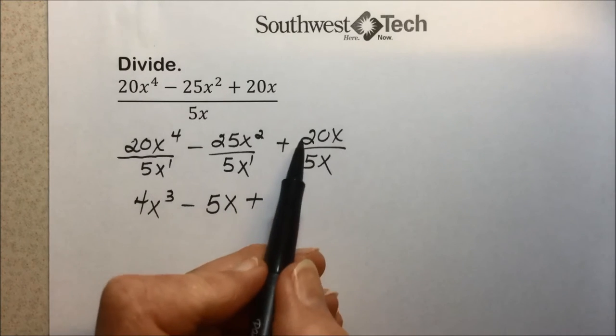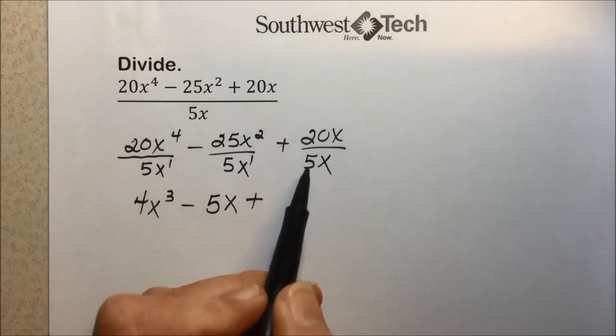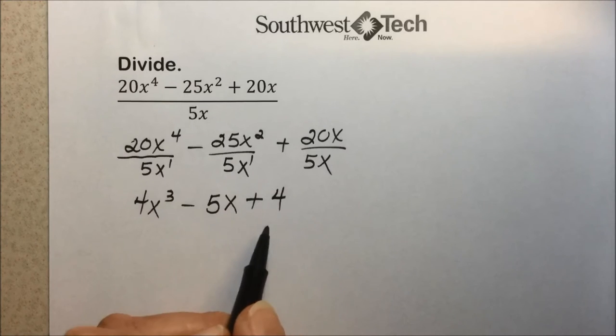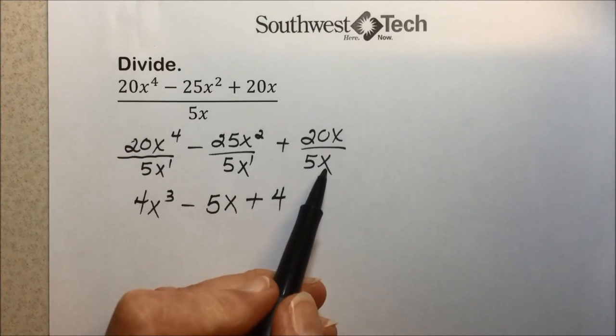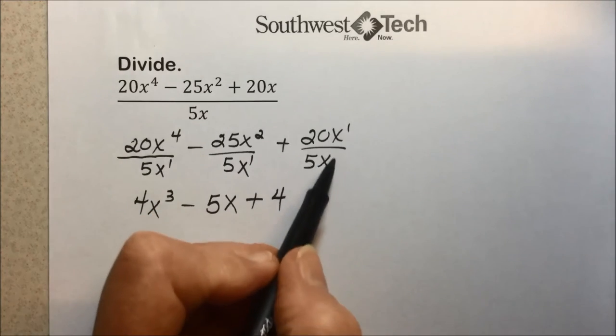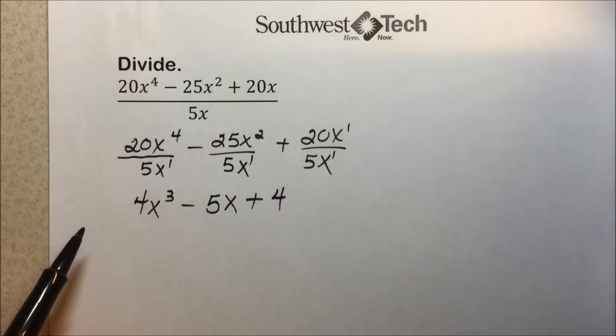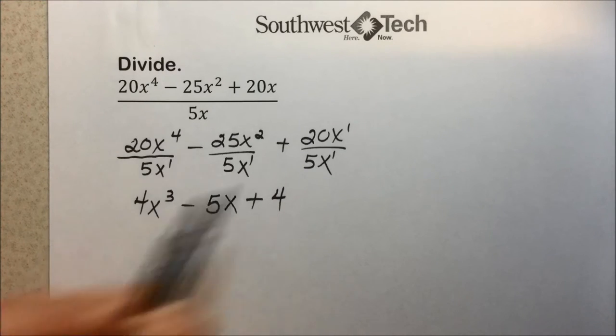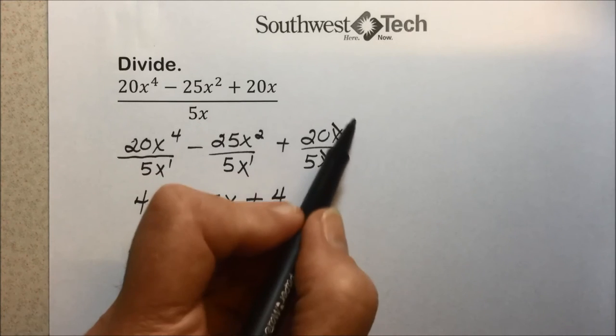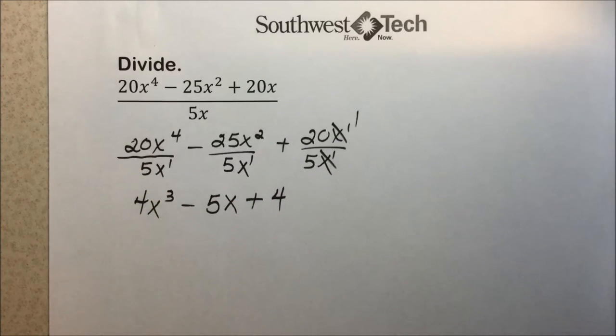And the last term, dividing the coefficients, 20 divided by 5 leaves 4. x divided by x, x to the first minus x to the first is x to the 0, which is defined as 1, or simply the x's cancel out. So that is our answer, the quotient to this polynomial divided by a monomial: 4x to the third minus 5x plus 4.